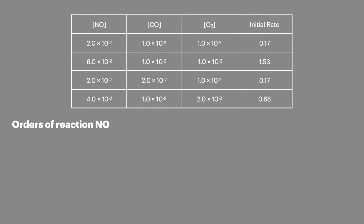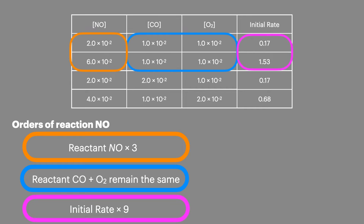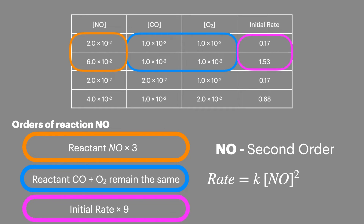Here's a data set that we're much more likely to see in an exam. We've got nitrogen monoxide across the top, carbon monoxide and oxygen as our three reactants, and an initial rate column at the end. We're going to start off by looking at the order of reaction relative to nitrogen monoxide. The first column shows that reactant is multiplied by three. Carbon monoxide and oxygen have remained constant. The initial rate has multiplied by nine. Because nitrogen monoxide multiplied by three and the initial rate went up by nine, the order of reaction for nitrogen monoxide is second order. We add this into the rate equation with NO to the power of two.